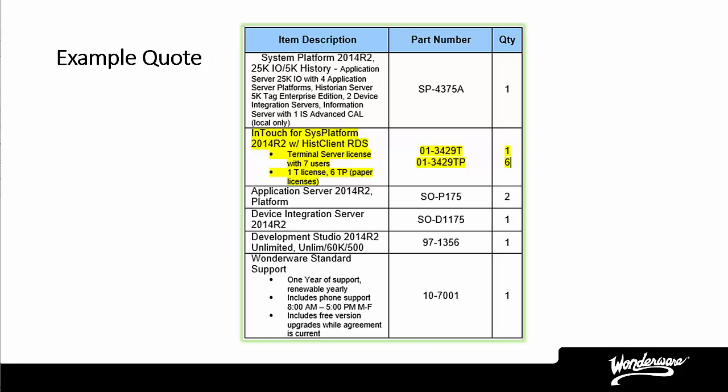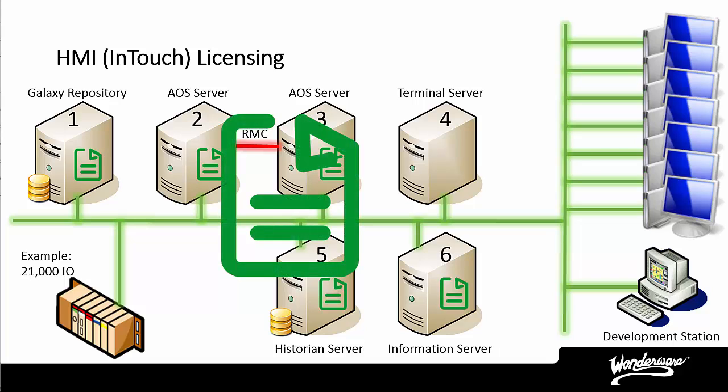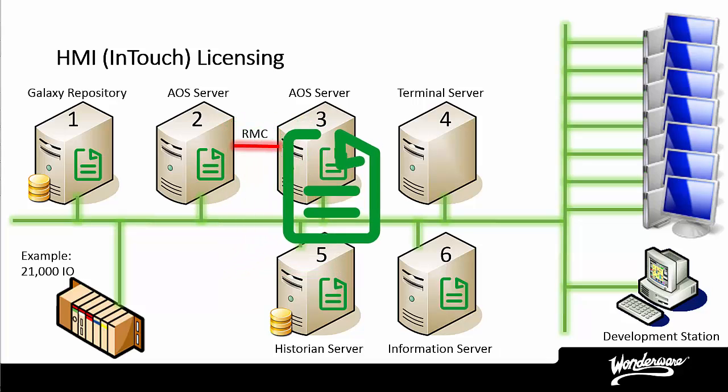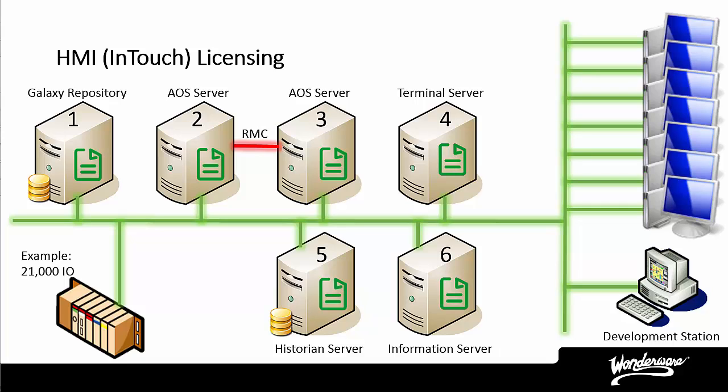Now let's go back to our example quote. In our example architecture, we have chosen to use a terminal server and thin clients to provide the HMI application to the plant floor. On the quote, you will see one or more lines similar to the one highlighted. In this type of architecture, Wonderware licenses the InTouch for System Platform software on the terminal server, and this allows the specified number of thin clients to connect and run the HMI application. This license is placed on the terminal server where the thin clients connect. If you have chosen to add a redundant terminal server, you can purchase a Wonderware InTouch for System Platform RDS Failover license, and that will be put on the redundant terminal server.